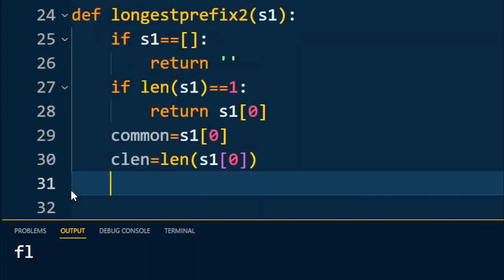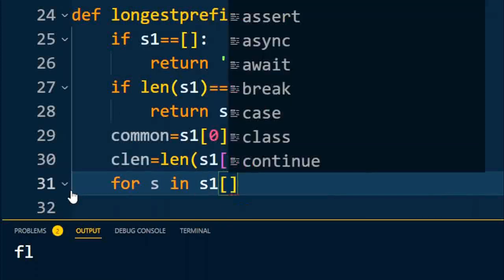I also take the common_length equal to the length of the first element in the list. After that I am going to iterate for each character of that string. So for s in s1 starting from 1 till the last character.